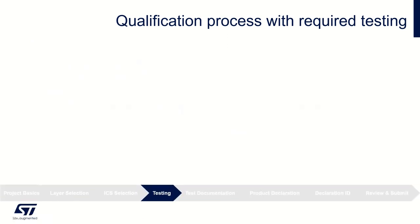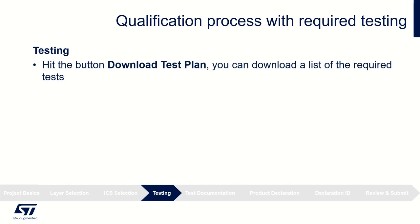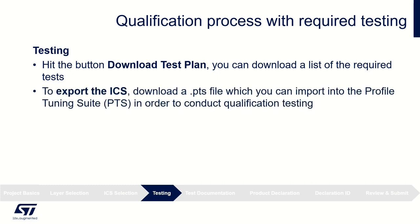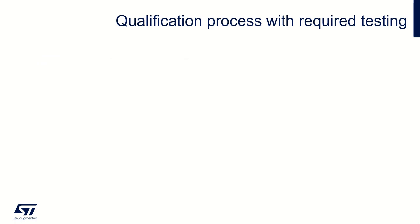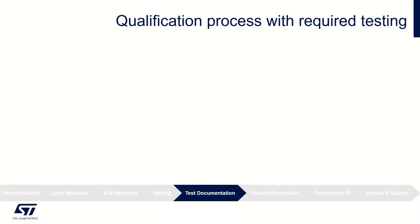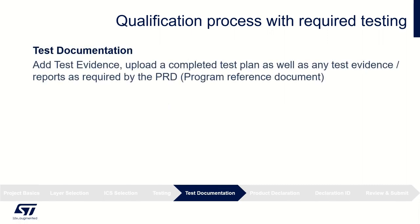The next tab is testing. Here you can download the test plan, which consists of a list of the required tests for your design generated based upon your inputs. It is an Excel file. For exporting ICS, download the PTS file. This can be imported in the Profile Tuning Suite in order to conduct qualification testing. In the following test documentation tab, you can upload the test evidence, including the completed test plan as required by the PRD document.